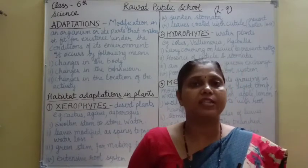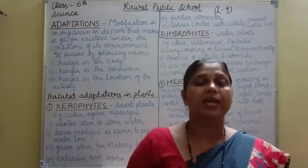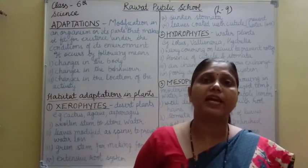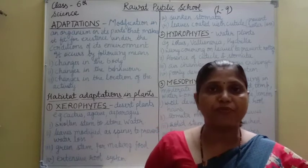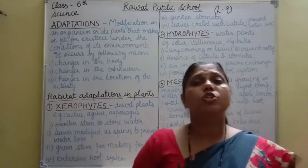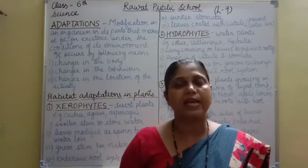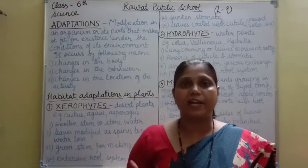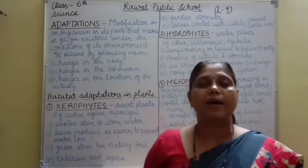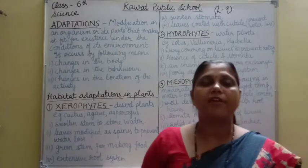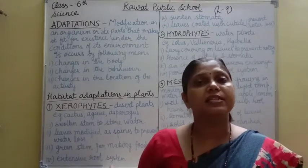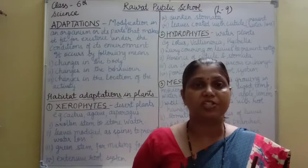Where the weather is very cold, there are also plants and animals. There are also deserts with absence of rain and there are still plants and animals. So there are so many variations in the atmosphere and environment. How can the plants and animals survive? This we are going to study in adaptations.